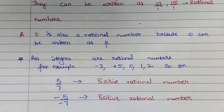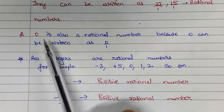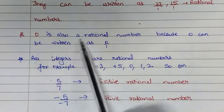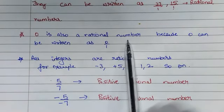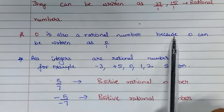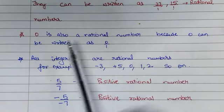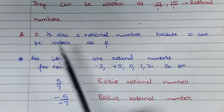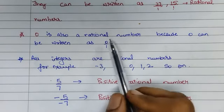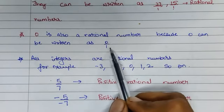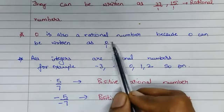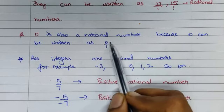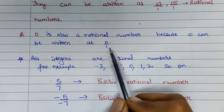As I have already told you, 0 is also a rational number because 0 can be written as 0 upon 1. P can be 0, but Q is never 0.